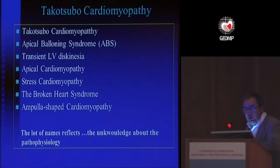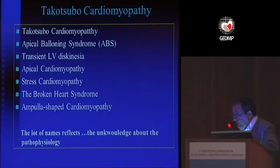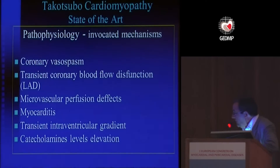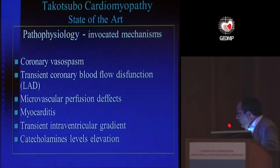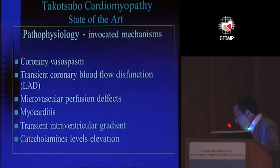In apical balloon syndrome, there are many designations, and the many names reflect our knowledge gaps about the pathophysiology of this entity. I prefer apical balloon syndrome over the others, as I will explain at the end. The main pathophysiological mechanisms invoked are coronary vasospasm — which was absent in our cases — transient coronary flow dysfunction, microvascular perfusion defects, myocarditis, transient intraventricular gradient, and catecholamine level elevation.